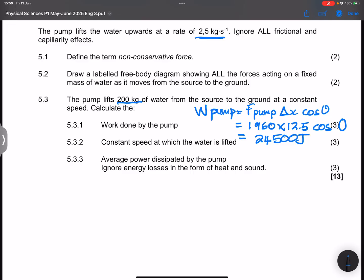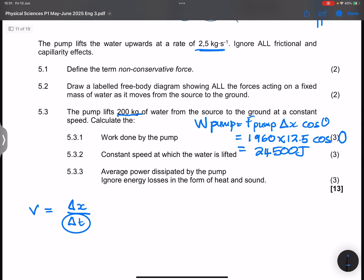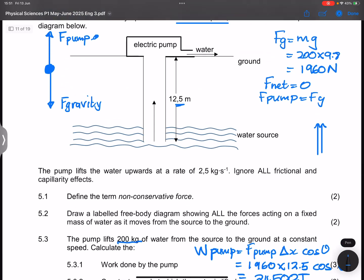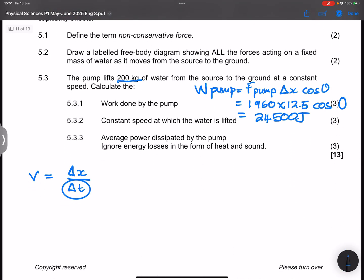Now they say to you, calculate the speed at which the water is lifted. So to get the speed, I'd say this is going to be the change in displacement divided by the change in time. So I need to find out how much time it takes for us to actually lift that mass of water. So anything that is related to time in this case is simply we've got 2.5 kilograms per second.